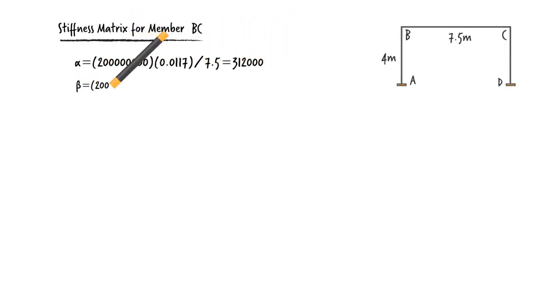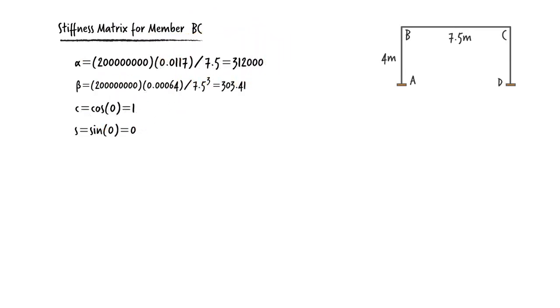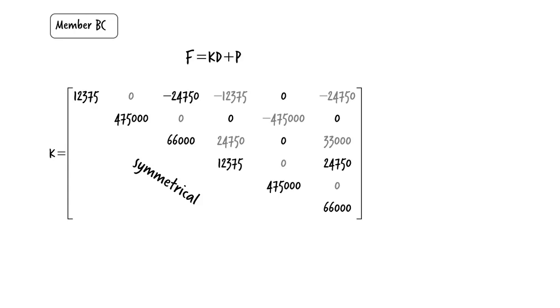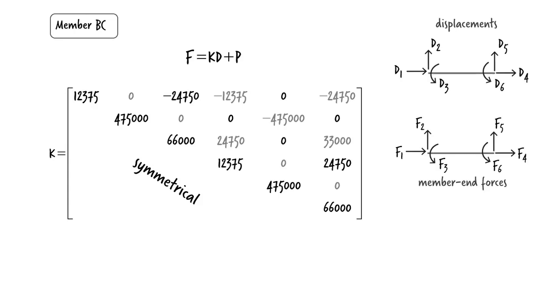For member BC, here are the parameters and the resulting stiffness matrix. For BC, since the member is subjected to external loads, the relationship between member-end forces and displacements should be written this way, where P is the vector of fixed-end forces due to the applied loads.